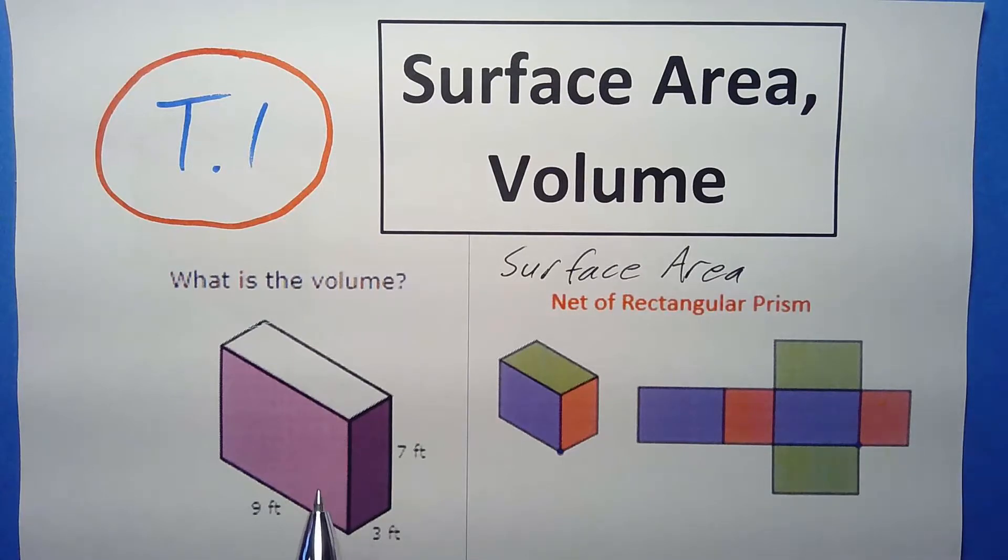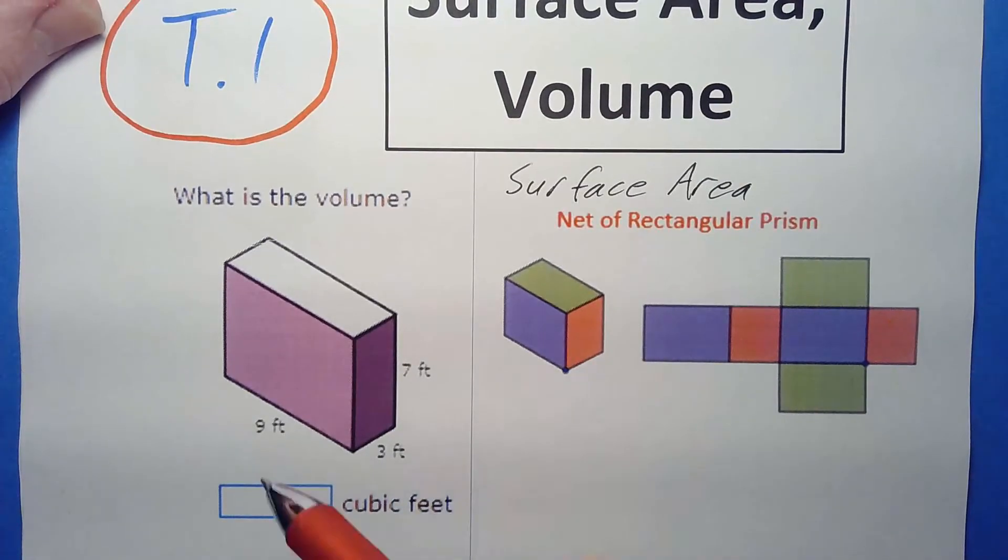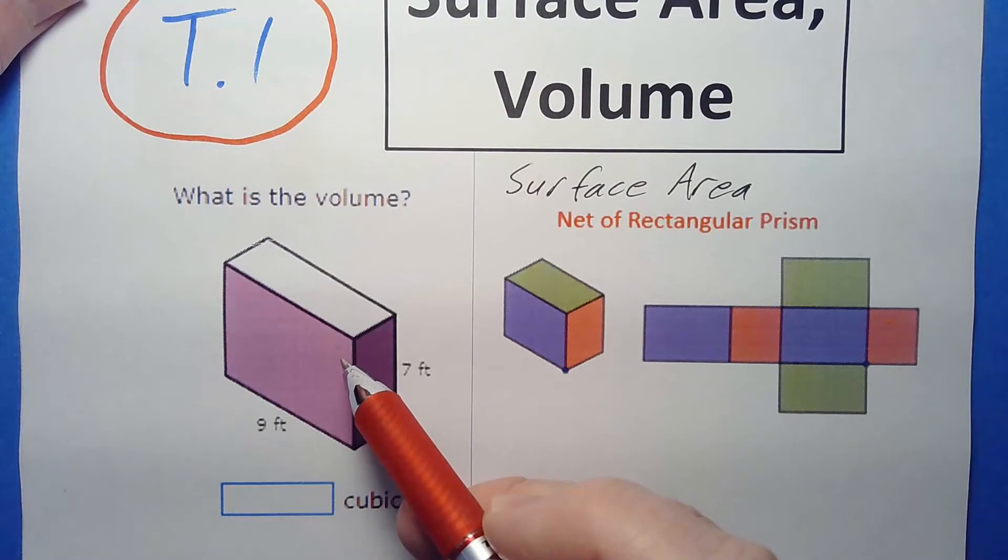We're gonna be working just with rectangular prisms, right? Most people would just call it a box. We're gonna have to find the volume. That's gonna give us answers that are like cubic feet. In other words, how much stuff goes in it, if you were like pouring water.